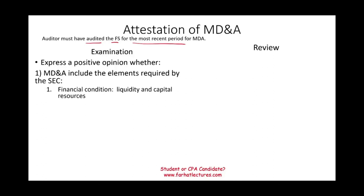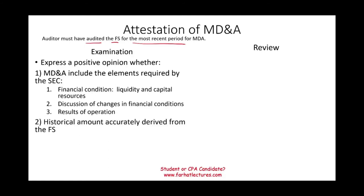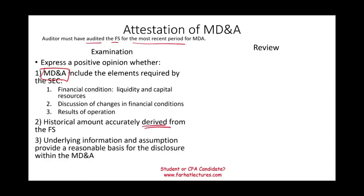In an examination, the auditor also opines that historical amounts are accurately derived from the financial statements — this is important because all figures in the MD&A must come from the financial statements. For example, if sales increased by 10% from year one to year two, you cannot state in the MD&A that sales increased by 15%. The auditor also expresses a positive opinion that the underlying information and assumptions provide a reasonable basis for the disclosures within the MD&A.